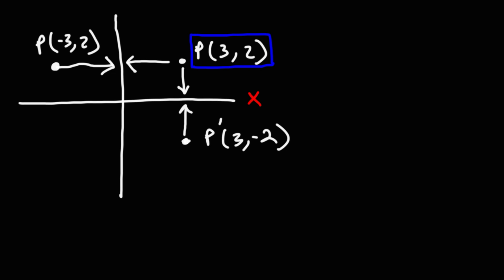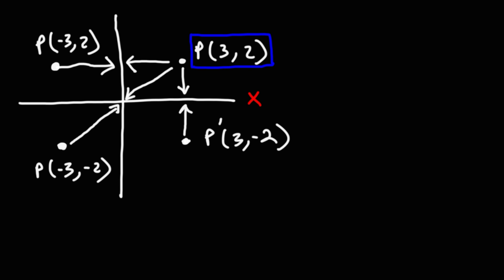Now what if we want to reflect that point across the origin? We have to travel a certain distance from the first point to the origin, and the reflected point will be equidistant from the origin on the other side. That point is going to be everything negated — so instead of (3, 2) it's going to be (negative 3, negative 2). Whenever you reflect a point about the origin, both the x and y values change sign.